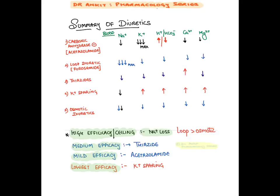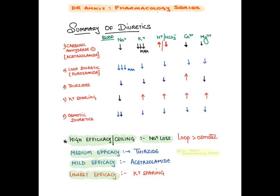Remember: loop diuretics lose all ions in urine. Thiazides also lose all ions except calcium — they preserve calcium. Potassium-sparing diuretics, apart from sodium loss, preserve all other ions. Carbonic anhydrase inhibitors increase H+ levels in the blood because they cause bicarbonate loss in urine, producing alkaline urine. This is the summary of the effects of diuretics.